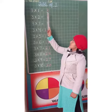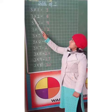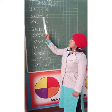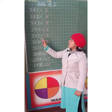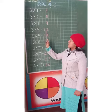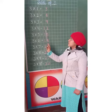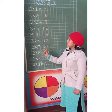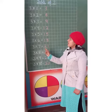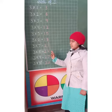3, 1's are 3. 3, 2's are 6. 3, 3's are 9. 3, 4's are 12. 3, 5's are 15.